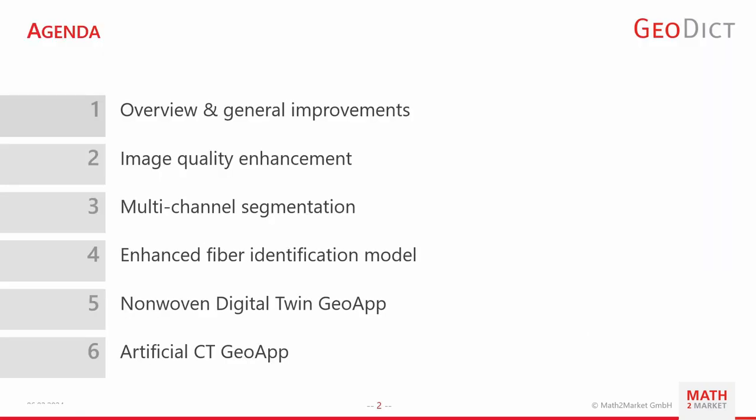I want to start by giving an overview of where we are using AI within GeoDict and a small list of general and miscellaneous improvements that we made in the AI subsystem. Then I want to talk about the image quality enhancement feature inside Import GeoWall, followed by the multi-channel segmentation feature, and then the new enhanced fiber identification model that we are shipping with FiberFind AI in GeoDict 2024.